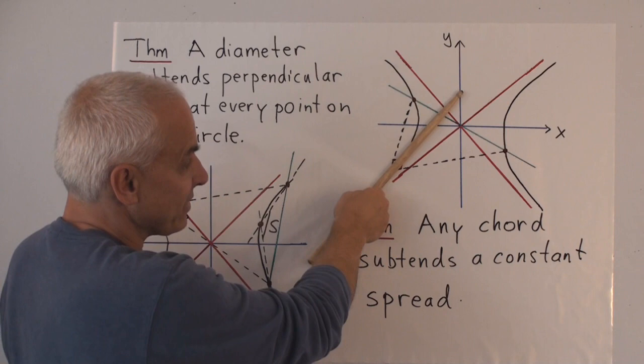Is it true in this case here? Is this perpendicular to this? Well, yes it is. These are reflections of each other in the line of slope one, or minus one.